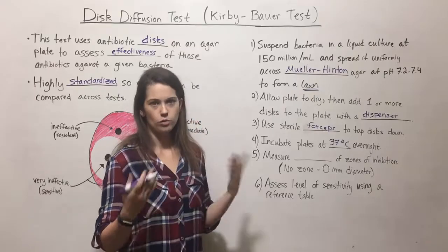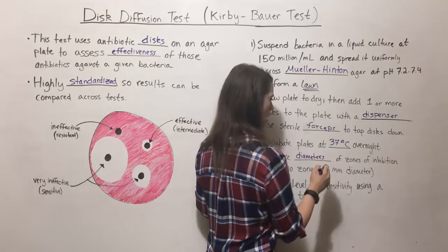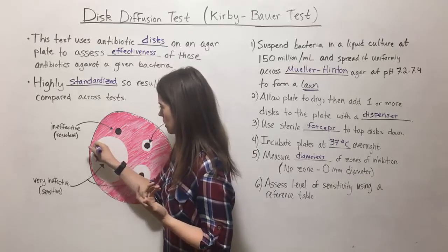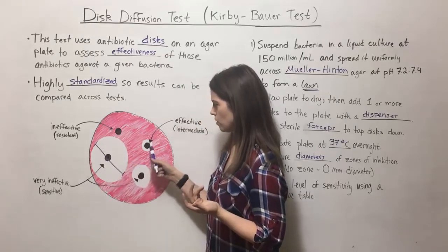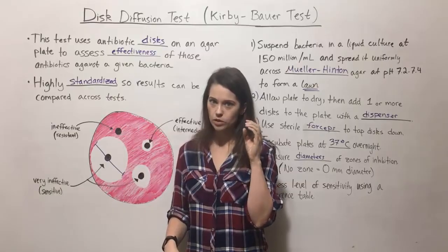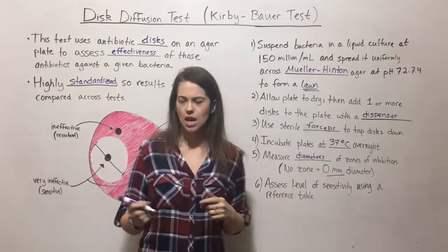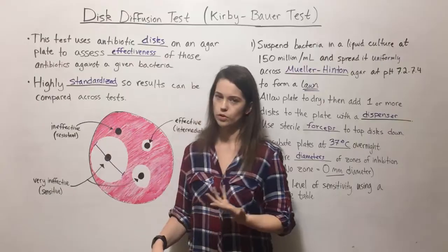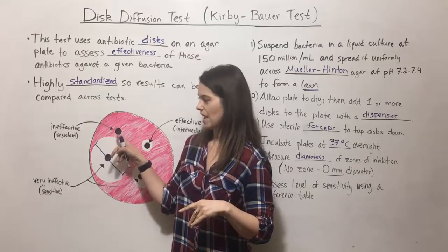After about 24 hours, you measure the diameters of the zones of inhibition using a ruler to see how many millimeters across each zone is. You do that for all the different discs. If there is no zone of inhibition — meaning the bacterial lawn grows right up to where it touches the disc — you record that as zero millimeters, which is standard practice to indicate no zone of inhibition.